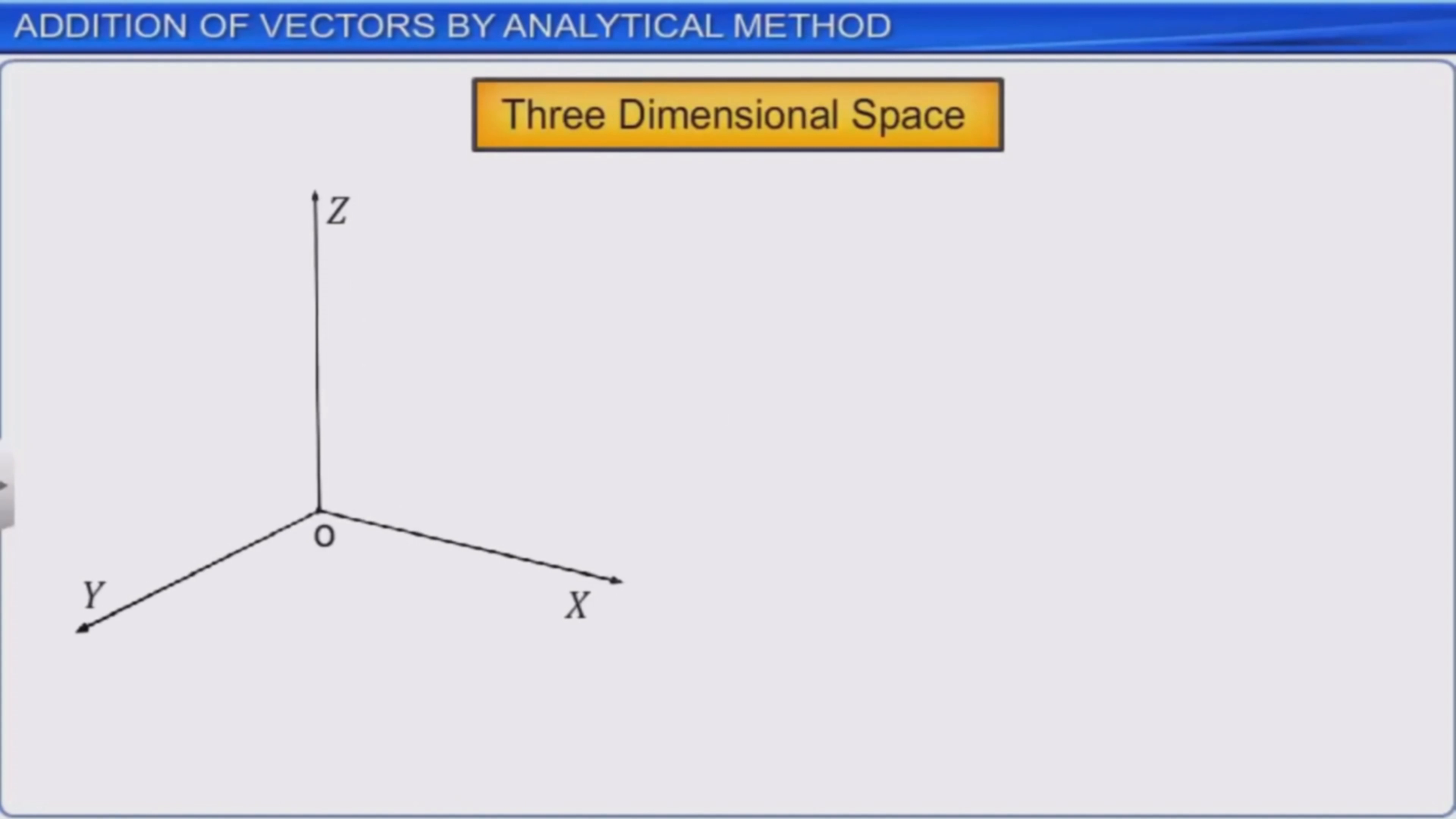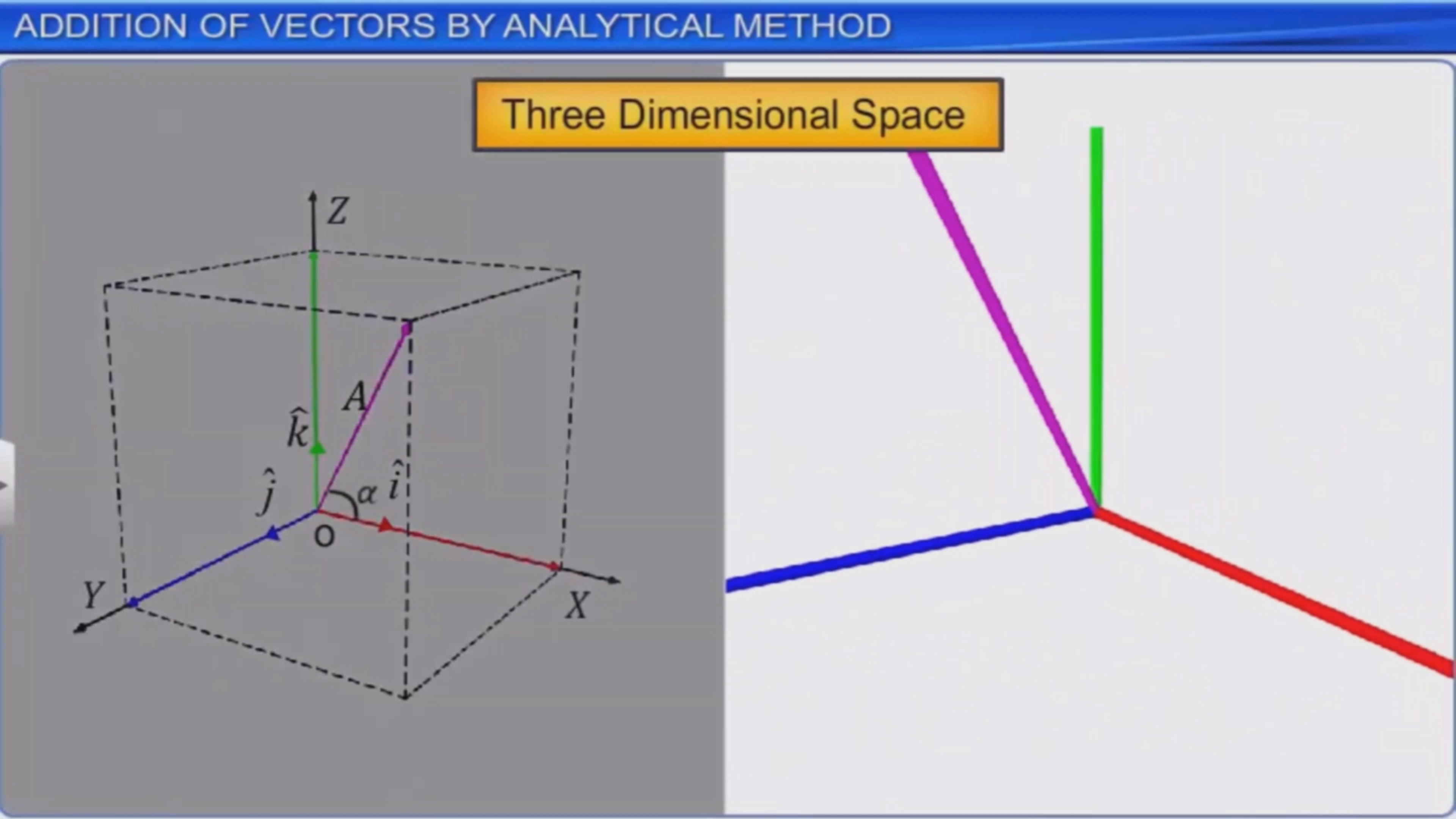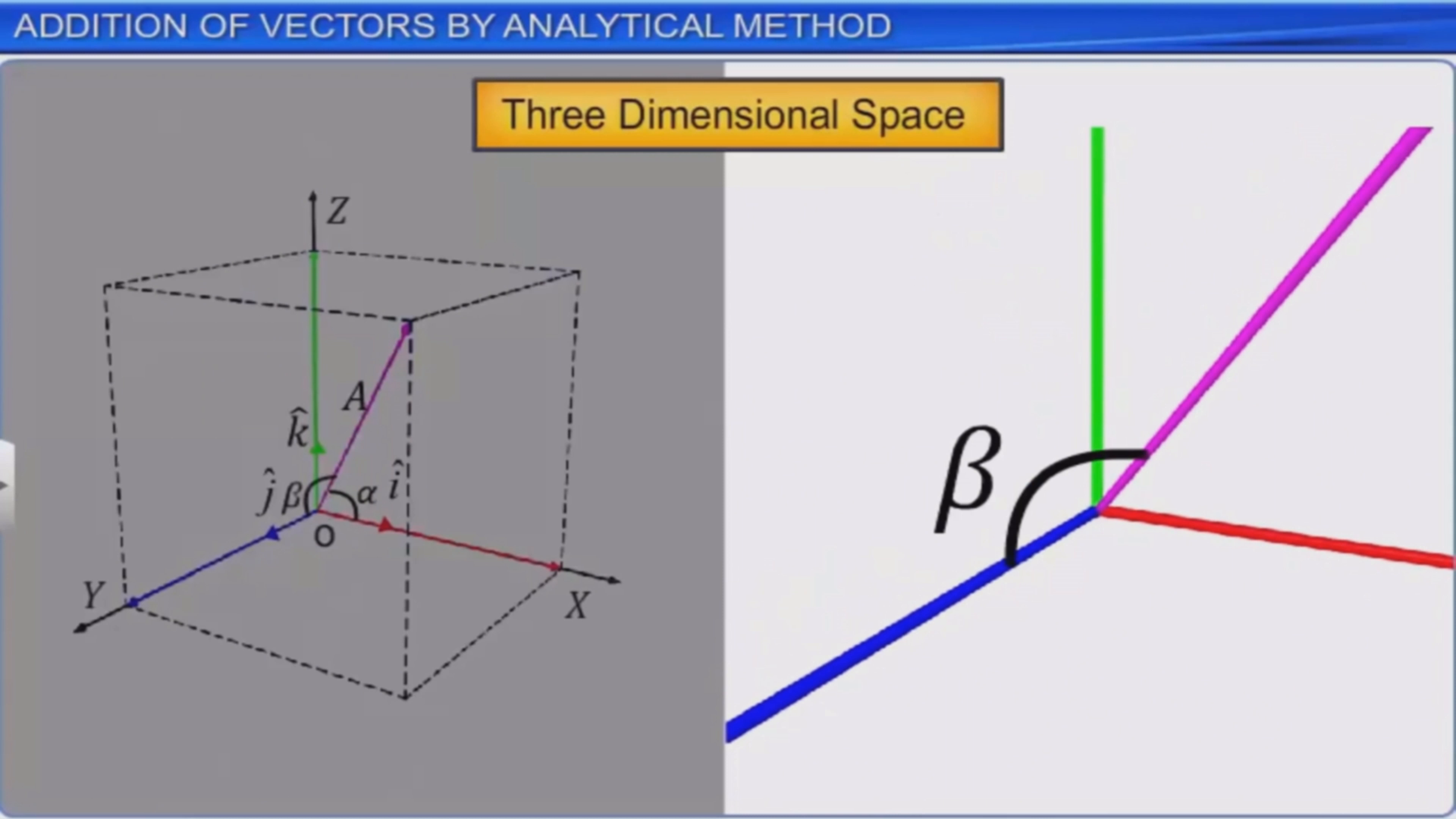Now let's discuss vectors in three dimensional space. Create x, y, and z coordinate axes passing through point O. Here alpha is the angle between vector A and the x-axis. Beta is the angle between vector A and the y-axis, and gamma is the angle between vector A and the z-axis.